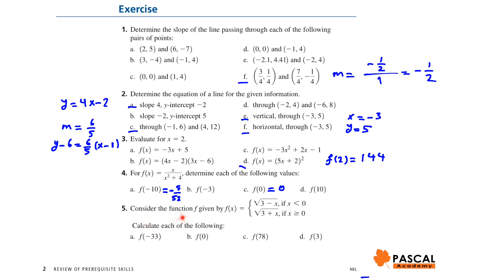Question 5: Consider function f given by f(x) equals square root of (3 minus x) if x is less than 0, and square root of (3 plus x) if x is greater than or equal to 0. Let's calculate parts A and D. It's a piecewise function. Since negative 33 is less than 0, f(negative 33) equals square root of (3 minus negative 33), which is square root of 36, which is 6. And f(3) is square root of (3 plus 3), and since 3 is greater than 0, it is square root of 6.